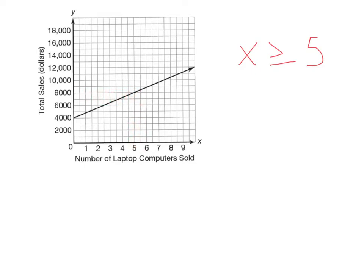Now if you wanted to make at most $10,000, we'd take our $10,000, look here, and that's at about 7.5. You can't sell 7.5 computers, so we'll go down to 7. At most, we want to sell 7 computers. So we'd say x is less than or equal to 7 computers. You'll be looking at these graphs, setting up inequalities, graphing them on a number line, just doing more work with these.